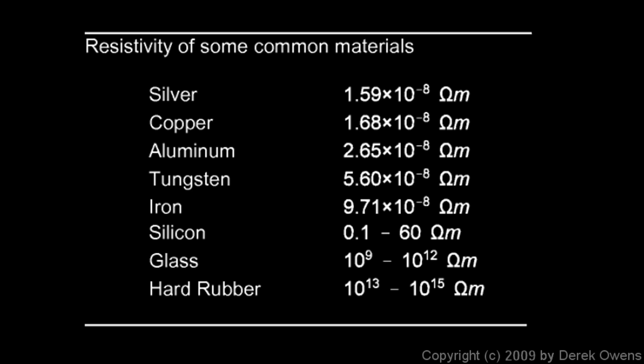Here's a chart that shows the value of resistivity for several common materials. Notice for silver, copper, aluminum, and also tungsten—but especially silver and copper—these numbers are very, very small. That's 1.59 times 10 to the negative eighth.